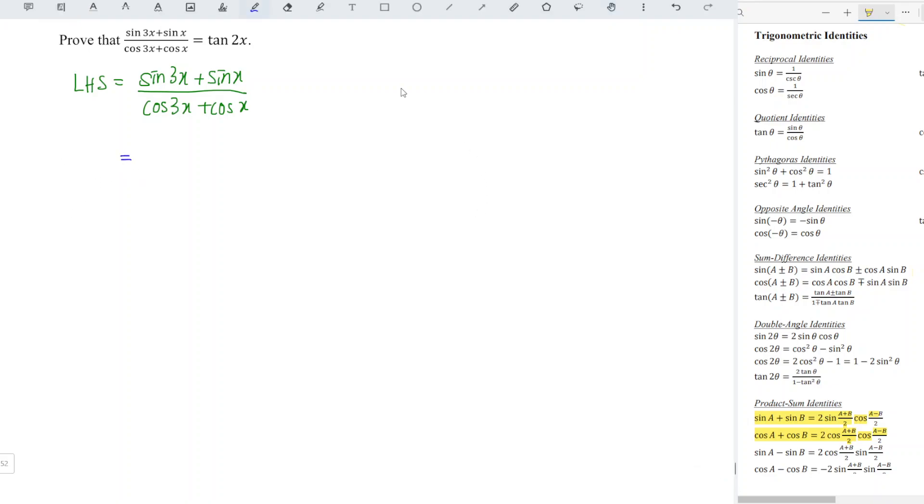First, we determine what A and B are. Let A be the bigger angle, which is 3x, and B be the smaller angle, which is x. So A plus B divided by 2, we obtain 2x, and A minus B divided by 2, we obtain x. We replace using the identity.